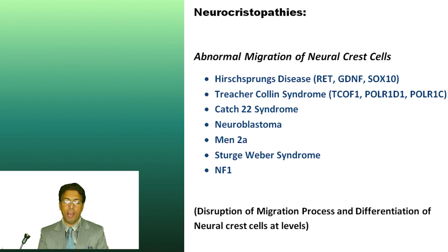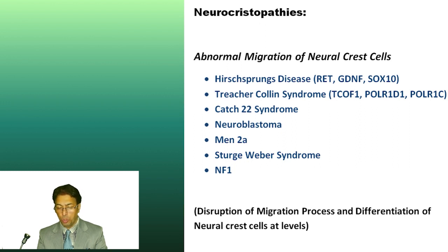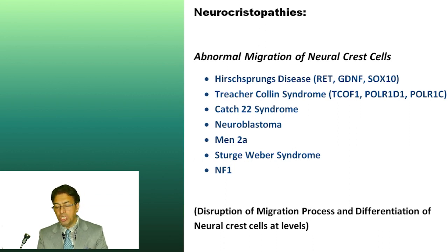Now, what can go wrong? Embryogenesis is a very specific process, especially the development of the nervous system. There are signal molecules, physiological substances, and genes which help in the normal migration of cells. Neural crest cells migrate to many different locations. Sometimes abnormalities can occur due to malfunction of genes like the RET gene, GDNF, SOX10, PCOF1, POLR1, DRR1, and POLR1C. These are the genes implicated in the migration process of neural crest cells.